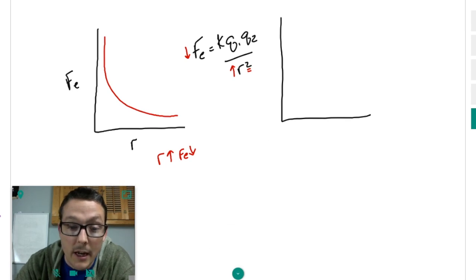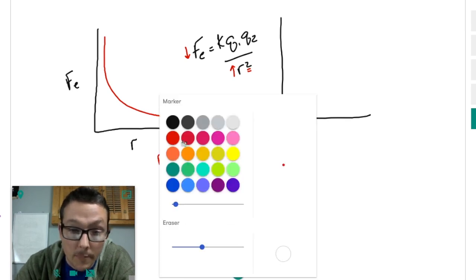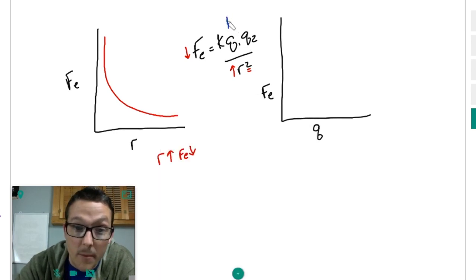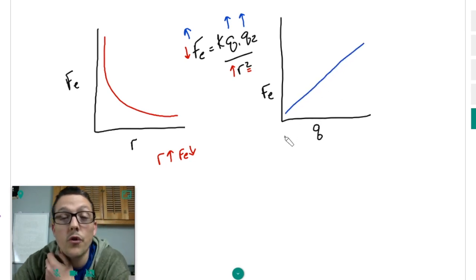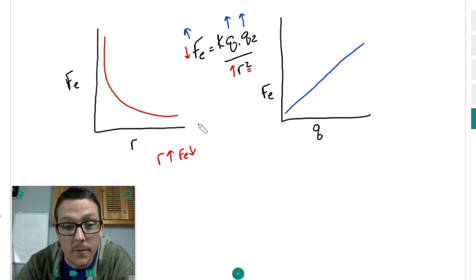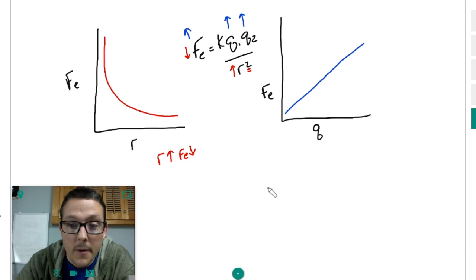But if I look at the relationship of FE to Q, these slopes in blue, as Q goes up, these are directly related to FE in a linear sense. So these will be the two graphs you are going to see for Coulomb's Law. They're going to ask you to relate these two and these.